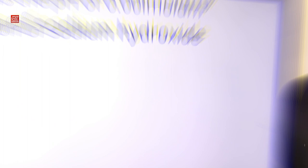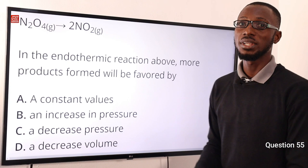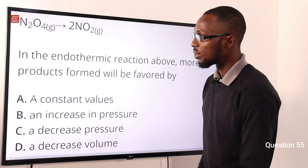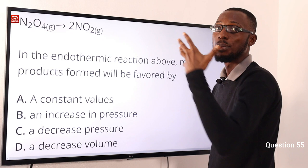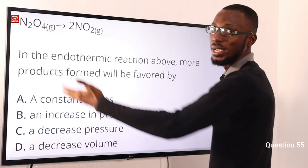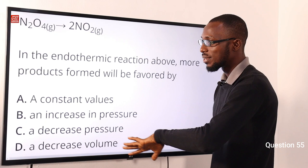Number 55: In the endothermic reaction above, more products formed will be favored by what? In this endothermic reversible reaction, what favors the forward reaction and product formation is a decrease in pressure. The correct option here is option C, a decrease in pressure.